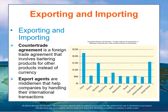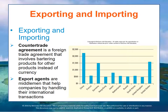Export agents are middlemen that help companies by handling their international transactions. One of the first options for a small company is to find an agent who operates as an export-import agent to handle the issues covered in prior lectures. This graph shows some of the world's largest exporting countries. While China is a leading exporter, the U.S. and Germany are fairly equal in exports. These are numbers from 2011, estimated in billions and calculated on an exchange rate basis.